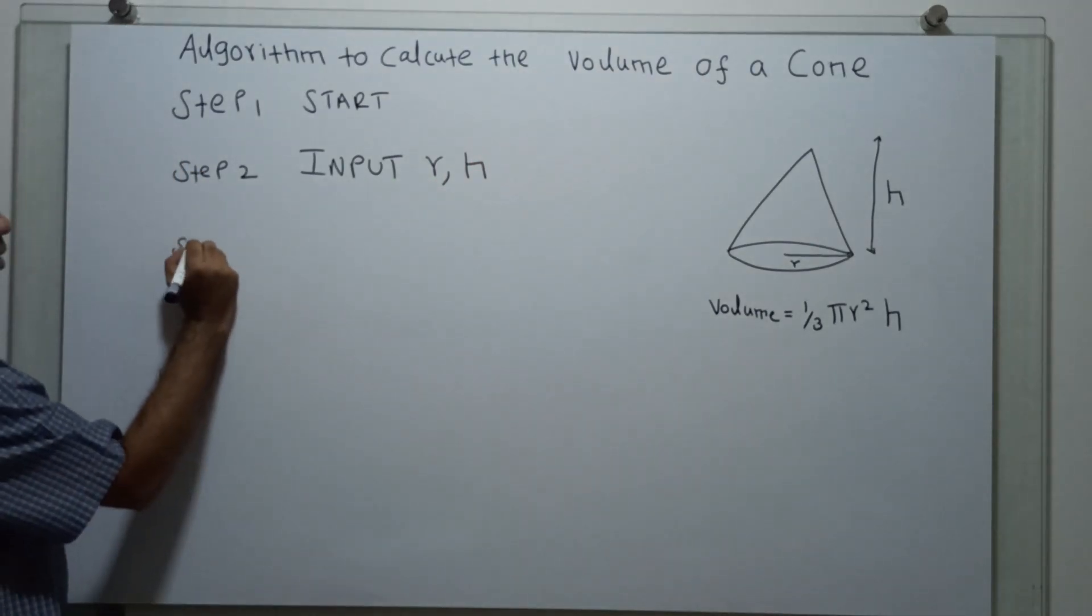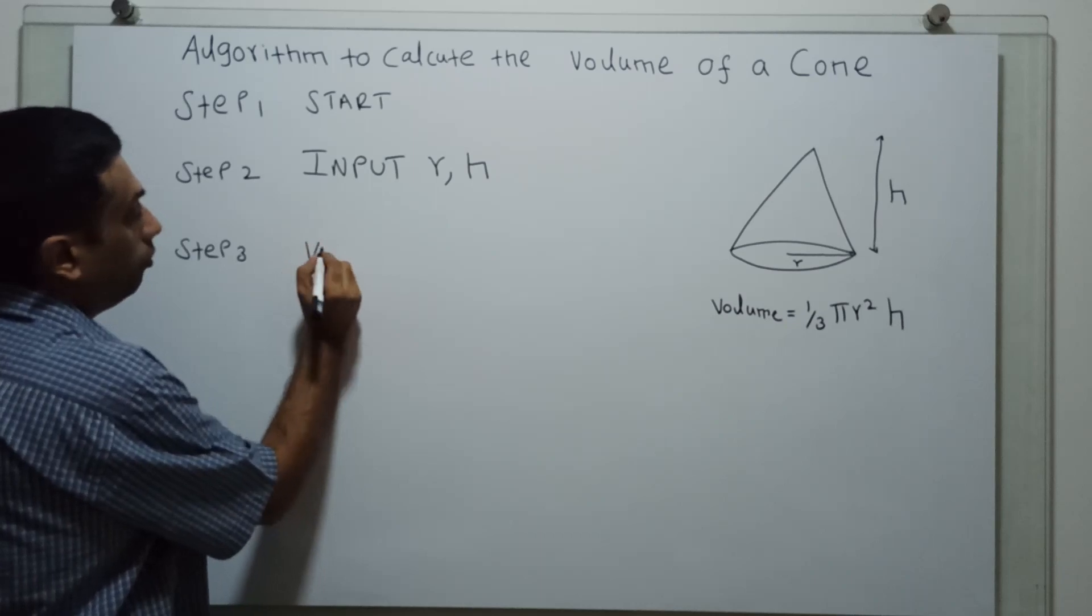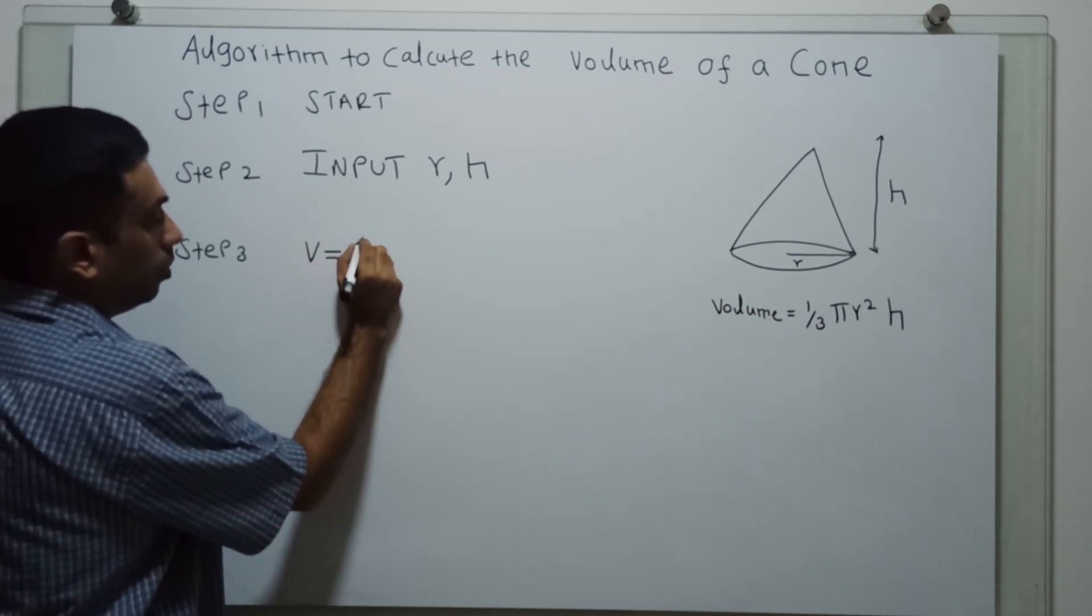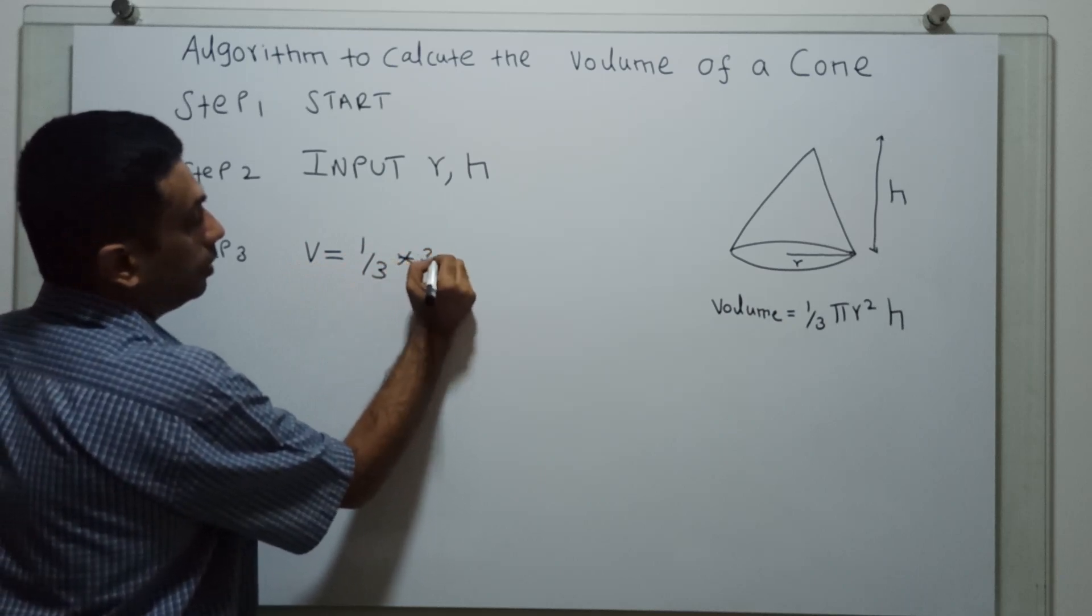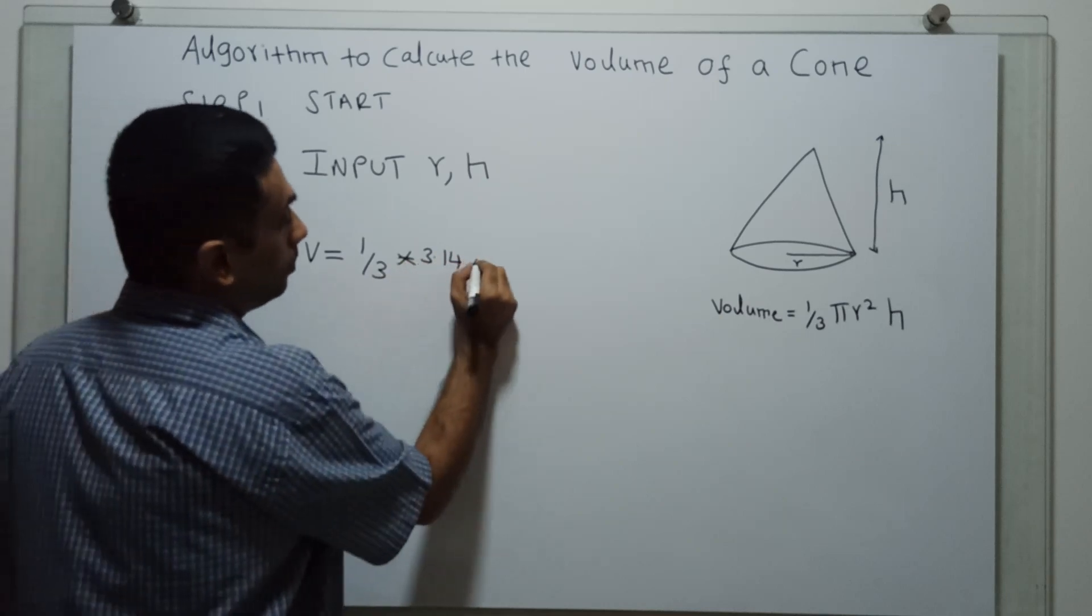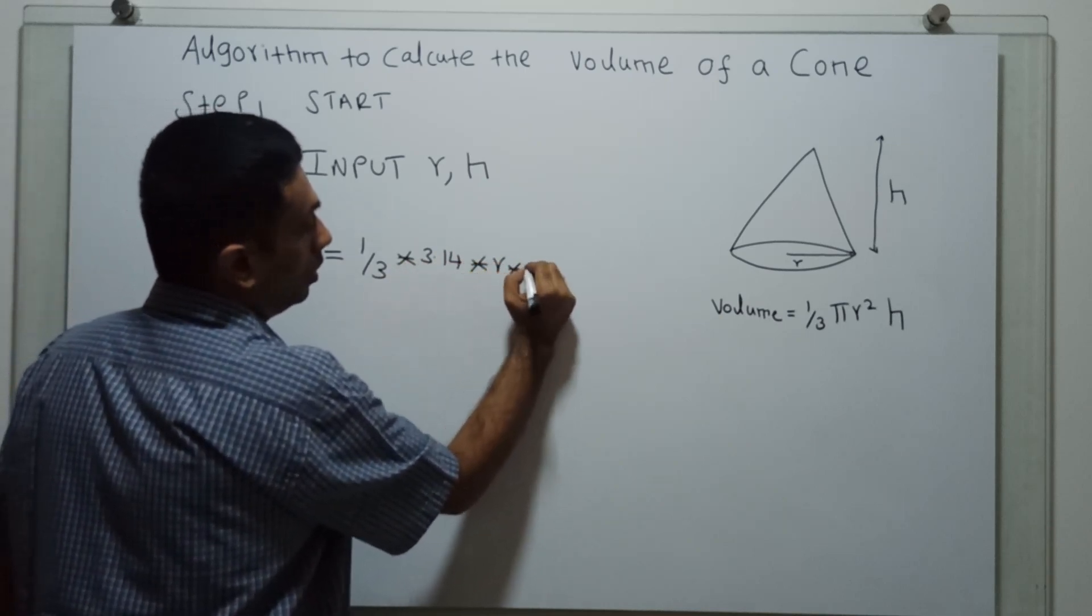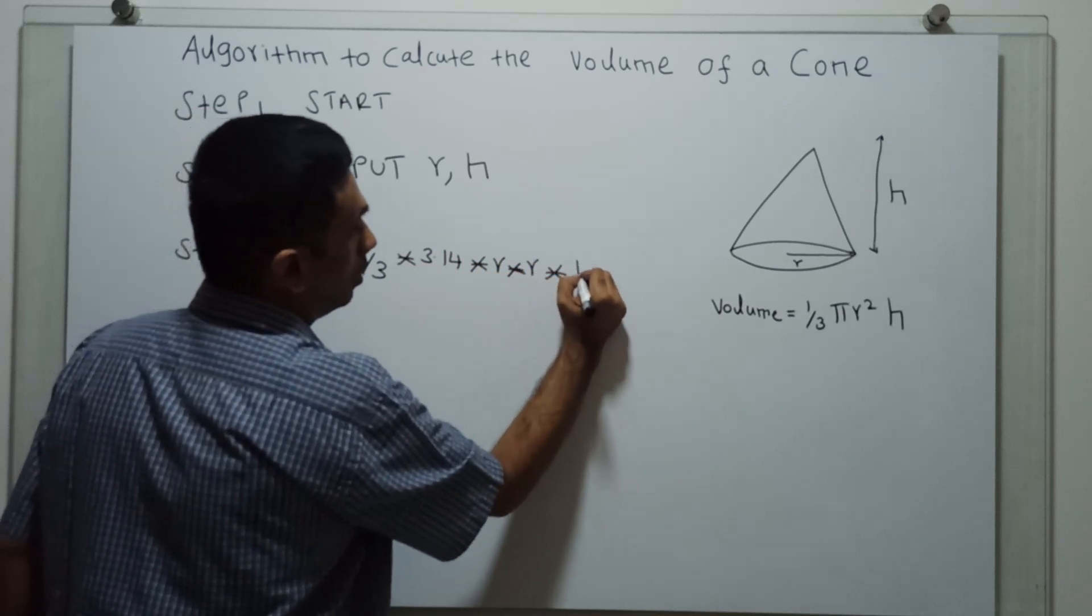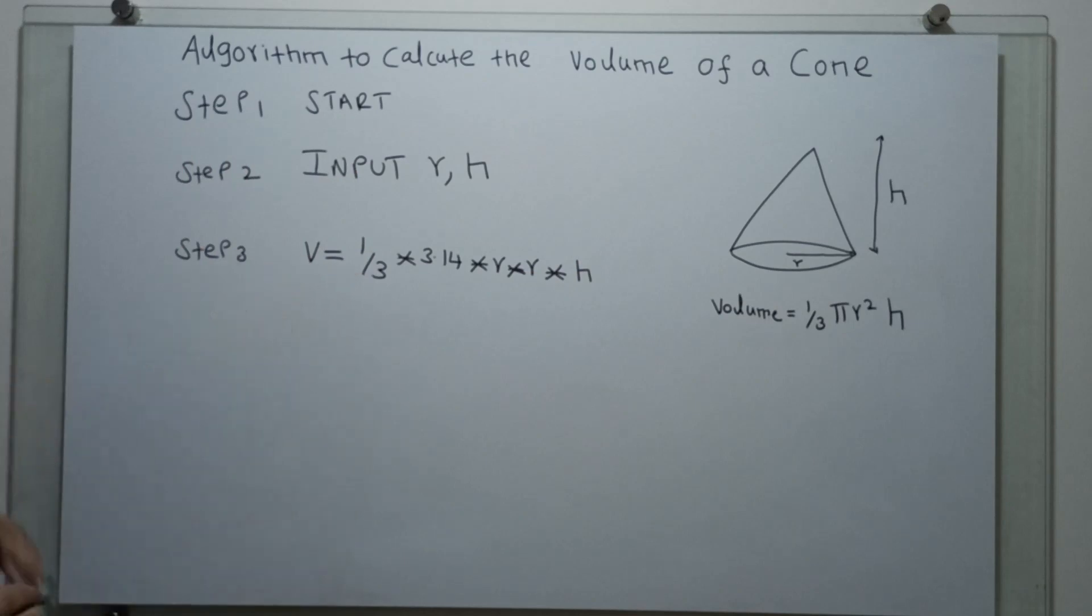Step 3, volume v equal to 1 by 3 into 3.14, the value of pi, into r square into h. So volume is going to be calculated.